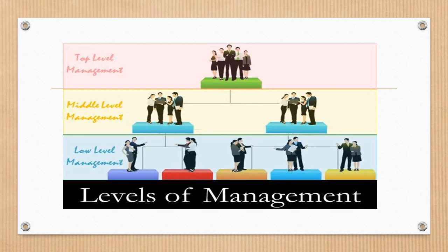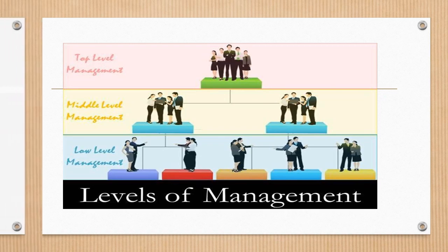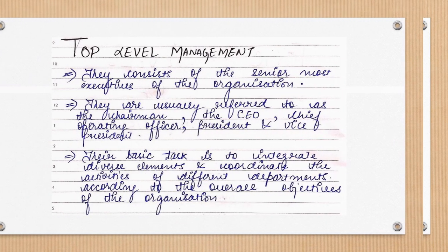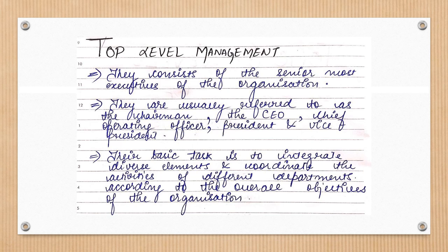A level is an imaginary line which separates managers from one another in an organization. Now we will talk about top-level management, which includes the senior-most executives: Chairman, President, Vice President, CEO (Chief Executive Officer), COO (Chief Operating Officer), and MD (Managing Director).